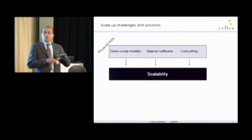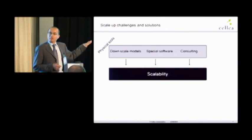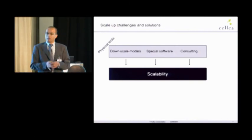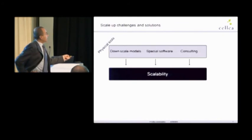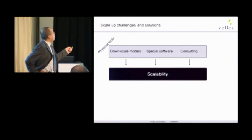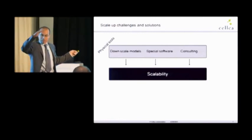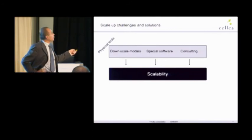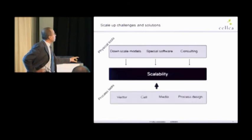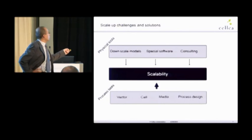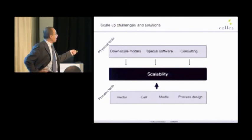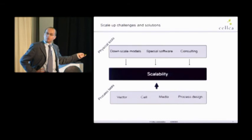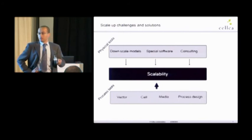The summary of the introduction is shown here in a visual way. We have a scalability problem. We have tools—downscale models. 10,000 liter is mimicked in 5 liter. We can buy software, we can hire consultants to solve this problem. And these tools I call physical conditions. There is another group of tools which I call process tools. That is the vector, the cell line, the media, and process. How we should integrate these modules to each other so that we don't have scalability problem.